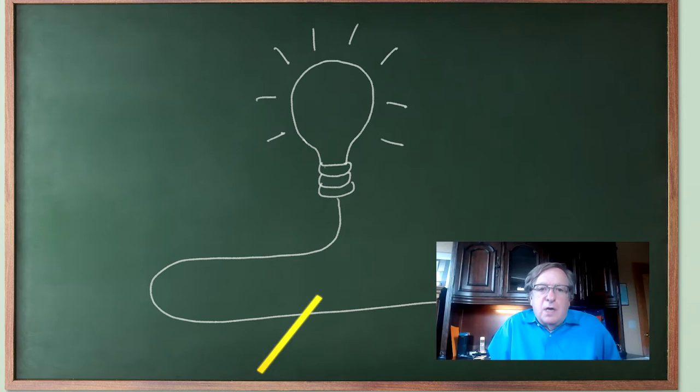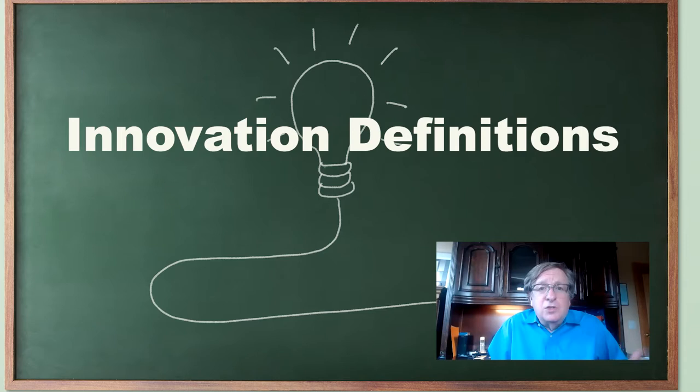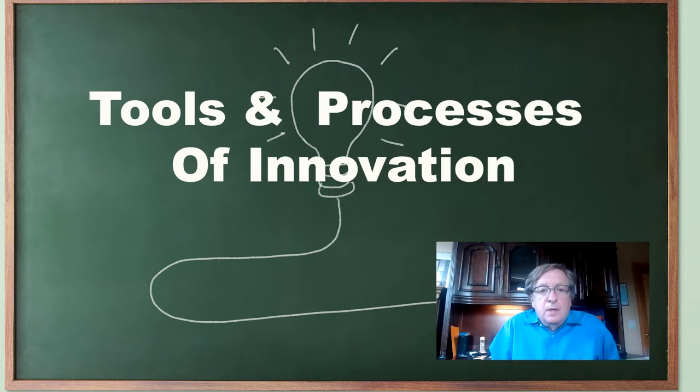Today we'll cover eight topics. First, why is this discussion even needed? Then we'll get into innovation and some definitions in topic two. Topic three, we'll talk about how companies struggle with innovation. Topic number four will be the tools and processes of innovation, which gives us a grounding of what those are. And then we'll get into invention and the definition of that in topic five.